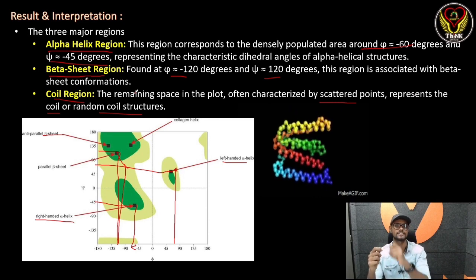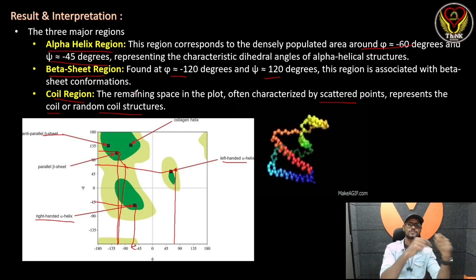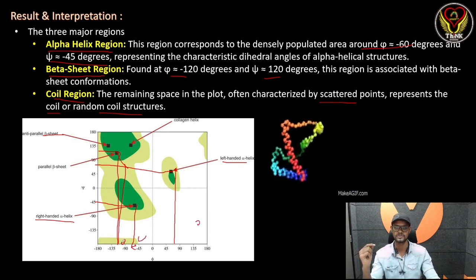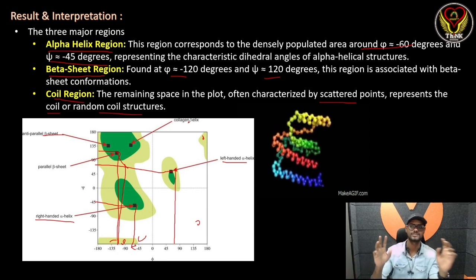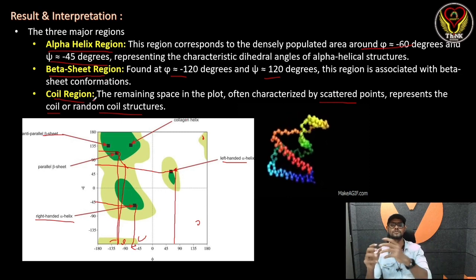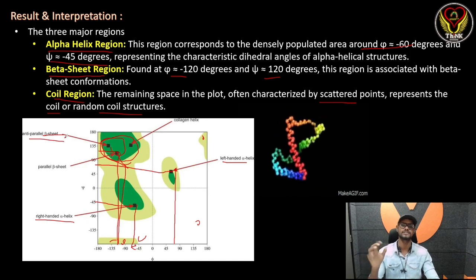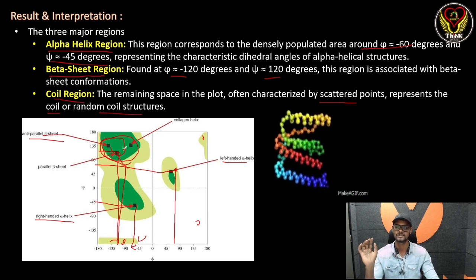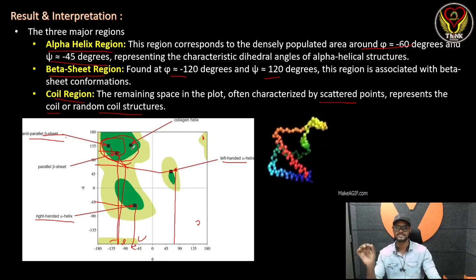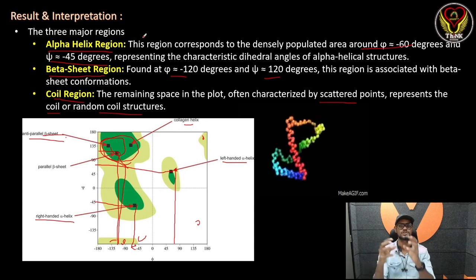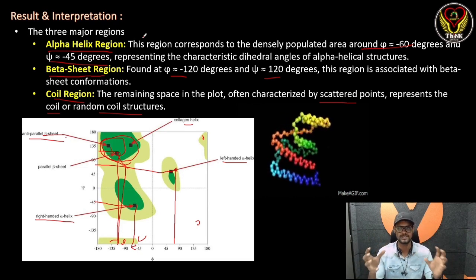Looking at the secondary structures: the alpha helix and beta sheet are the main ones. For a given protein, you can see that there are beta sheets in specific areas of the plot. If you look at the green color, we have parallel beta sheet and anti-parallel beta sheet, as well as the collagen helix structure. If you look at the coordinates on the plot, you can identify each structure. This is the Ramachandran plot and its result.